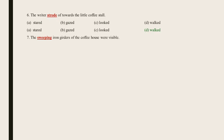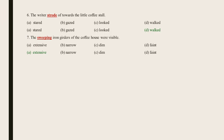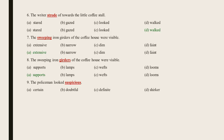Statement 7: The sweeping iron girders of the coffee house were visible. The underlined word is sweeping — the right answer is Extensive. Statement 8: The sweeping iron girders of the coffee house were visible. The underlined word is girders — the right answer is Supports. Statement 9: The policeman looked suspicious. The underlined word is suspicious — the right answer is Doubtful.